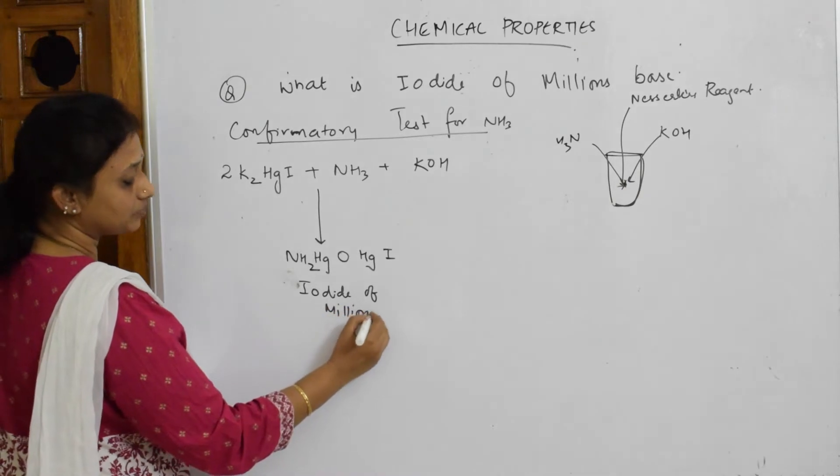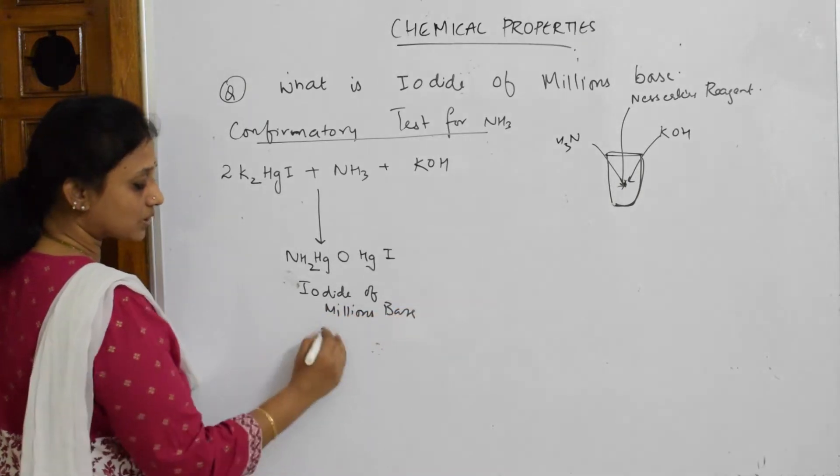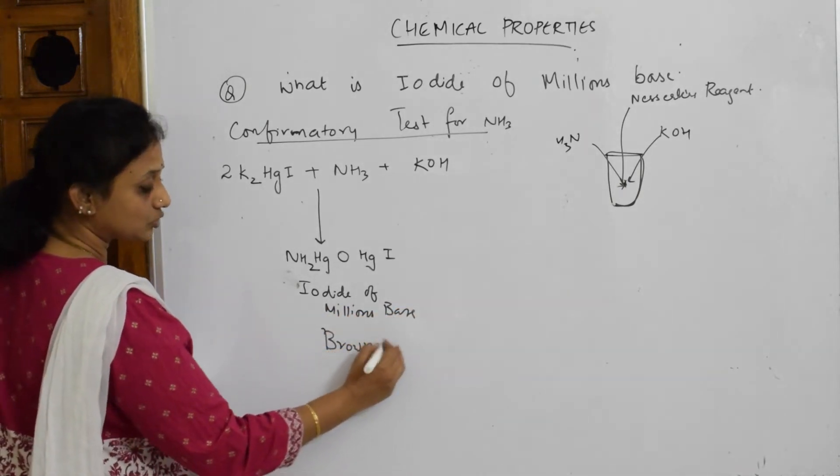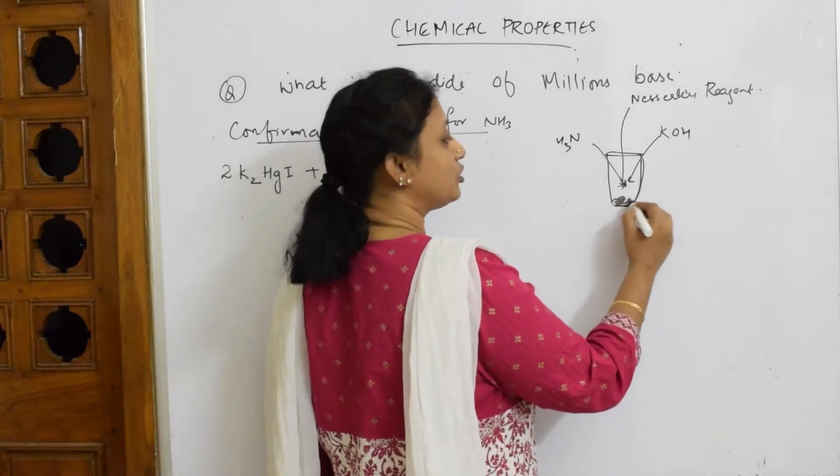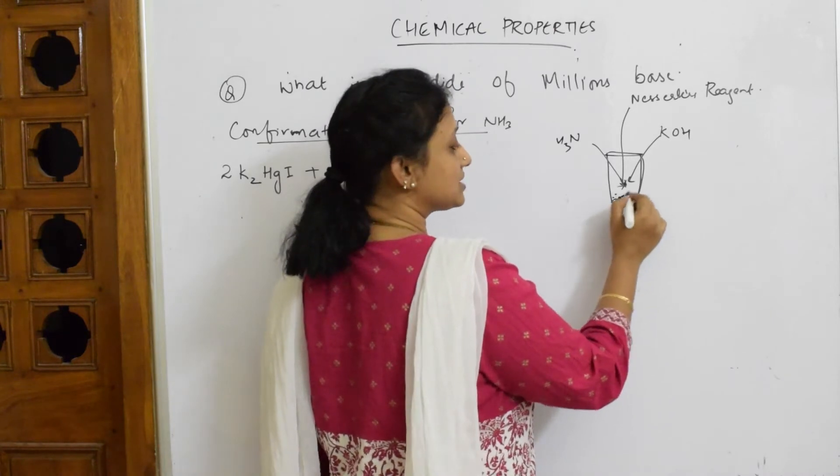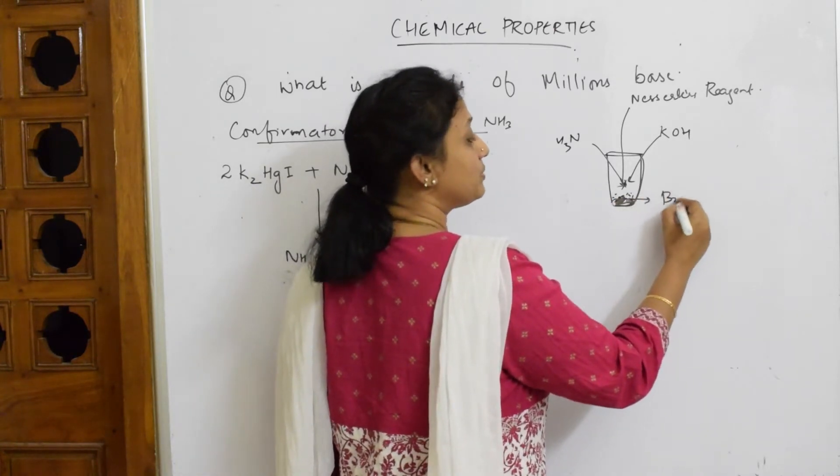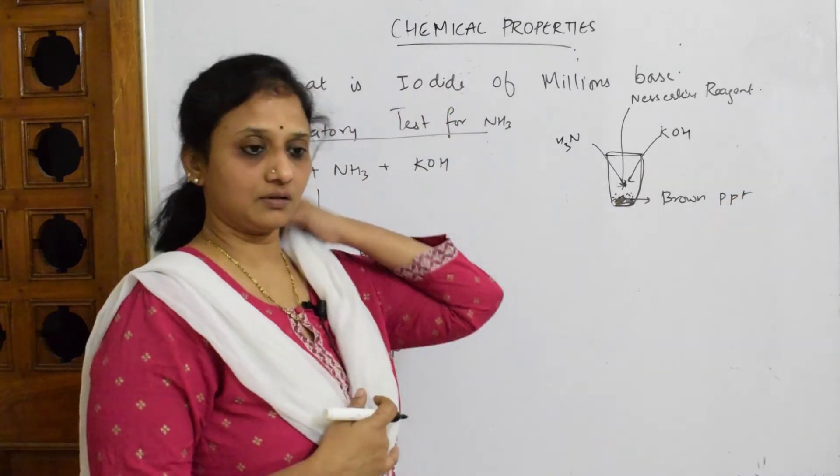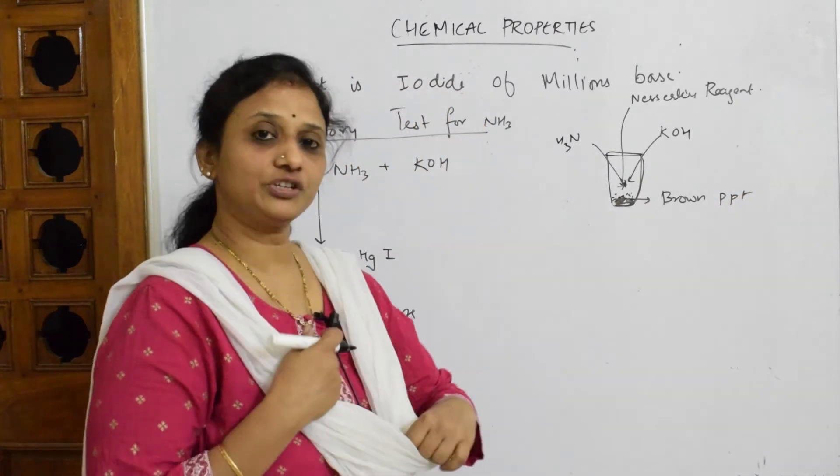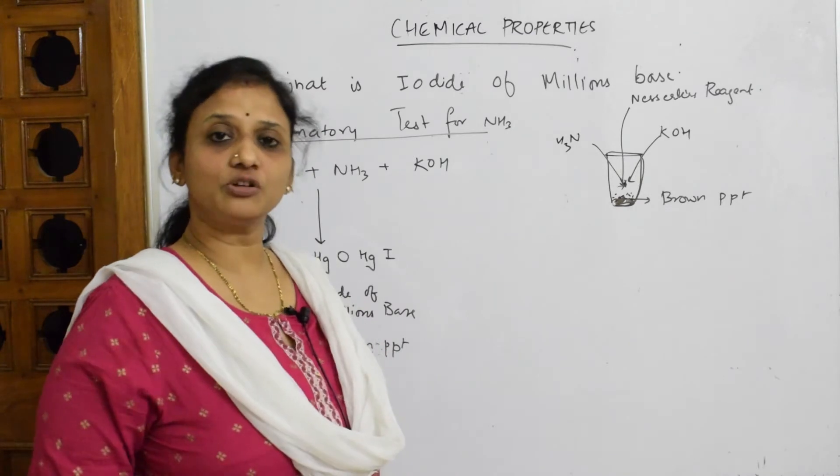This is the brown precipitate which you get. You would have seen chocolate brown PPT which you observed if the ammonia is present. Immediately you would have got this precipitate form, brown PPT. After observing you would have gone to your teacher and said, the cation which I got is ammonia.